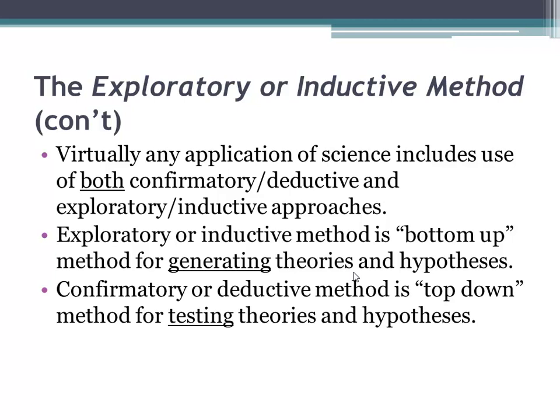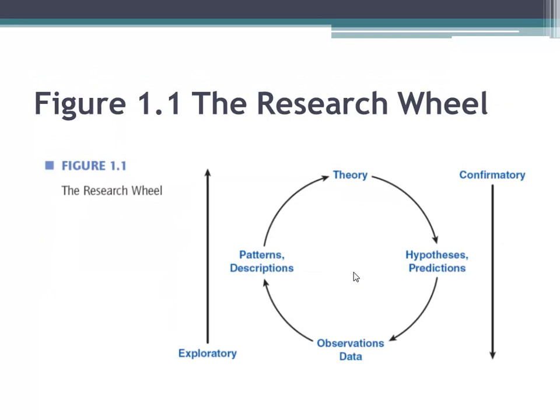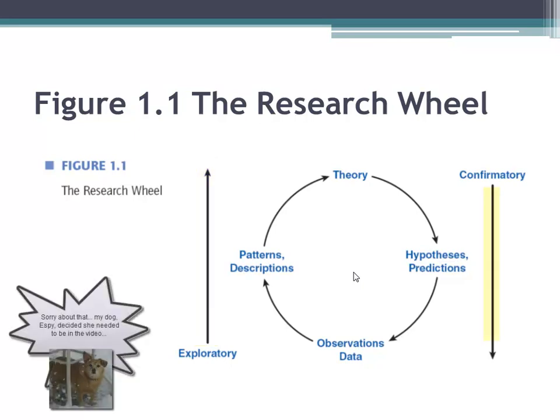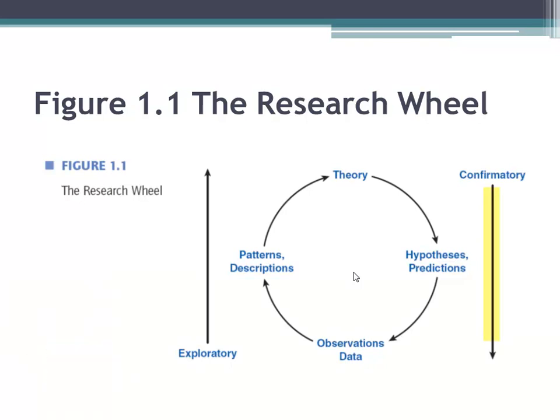The confirmatory method is a top-down or theory-to-hypothesis-testing approach, used most by quantitative researchers — they state hypotheses, make predictions, collect and analyze data, and draw a conclusion about whether the hypothesis is supported or rejected. In contrast, the exploratory method is a bottom-up or theory-generation approach used by many qualitative researchers. They enter the field with no predetermined theory, start with particulars they observe, and develop descriptions or sometimes theories based on what they see. Virtually any application of science includes use of both approaches, either in a single study or over time, as demonstrated in Figure 1.1.